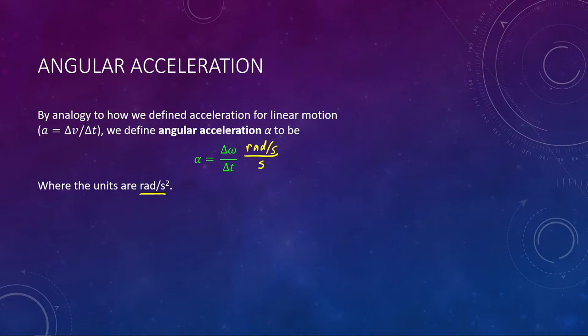We measure angular speed omega in radians per second and time in seconds, so the units of angular acceleration are radians per second squared — just like regular acceleration was meters per second squared. The directions for angular acceleration are a little more complex. A velocity is positive if counterclockwise, negative if clockwise. But angular acceleration direction also depends on whether you are speeding up or slowing down.